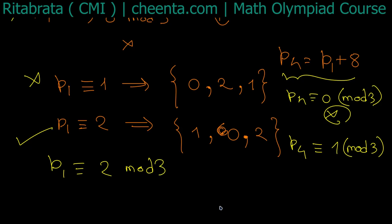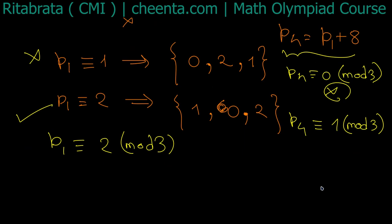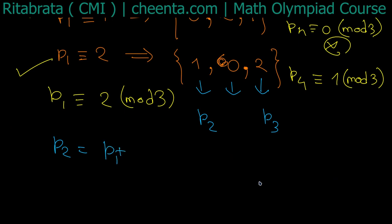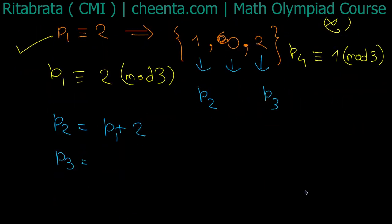So p1 is 2 modulo 3. Now p2 and p3, they lie in this set, and modulo 3 they give 1, 0, and 2. Now 0 cannot be occupied by p2 and p3 because none of them are 0 modulo 3. This must be given by p2 and this must be given by p3. So what can you also conclude? That p2 equals p1 + 2 and p3 equals p1 + 6. p1 + 4 is not possible. So p1 + 4 is congruent to 0 modulo 3 since p1 is congruent to 2 modulo 3.